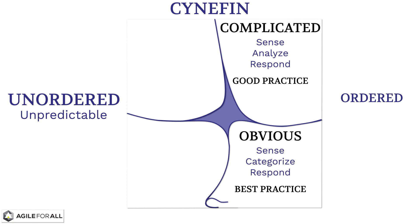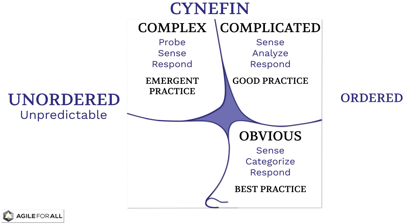This type of system is known as a complex system. Complex systems have unpredictable emergent outcomes. Because we can't predict up front, the decision-making process is to first probe the system to see what we can learn, conducting safe-to-fail experiments. We sense the outcomes, and then respond by either amplifying or dampening the change. Complex systems are the realm of emergent practice — new patterns that are typically effective for a limited amount of time since the system is under constant change.